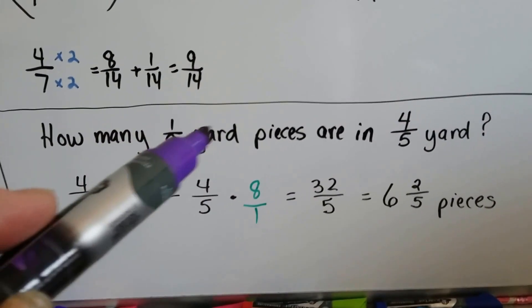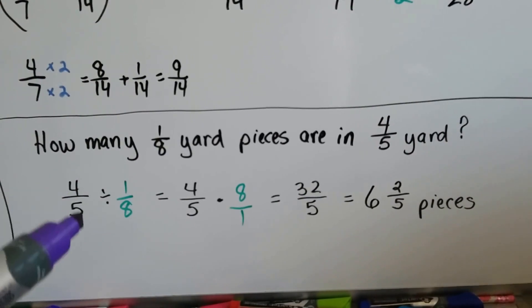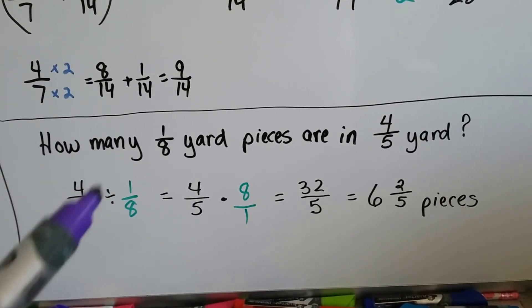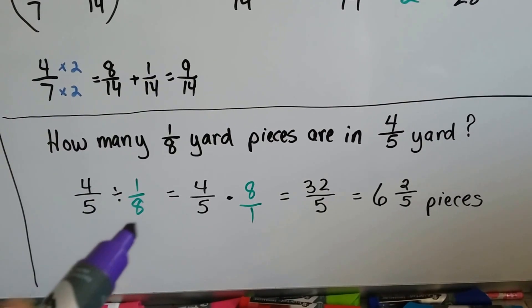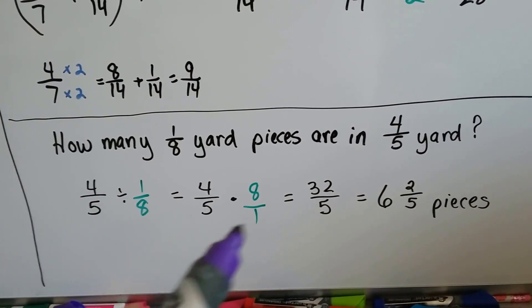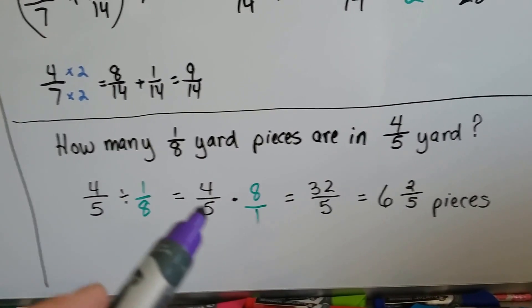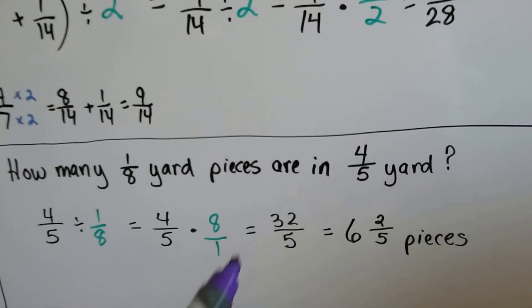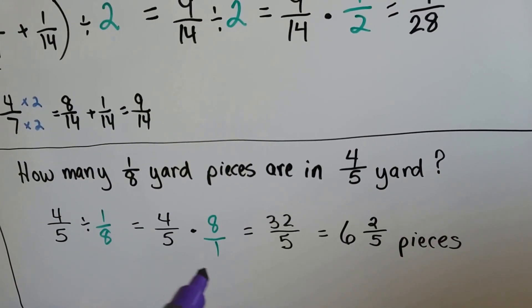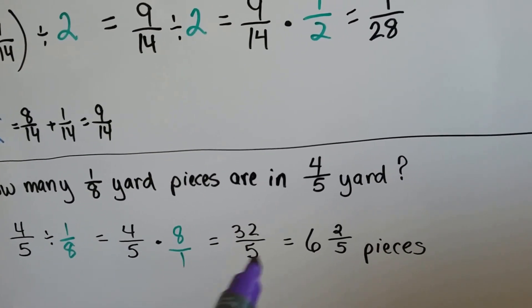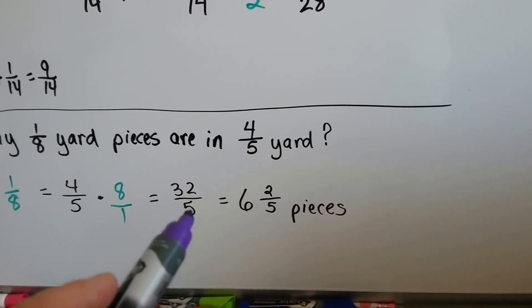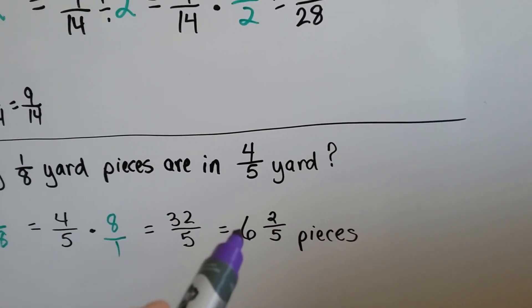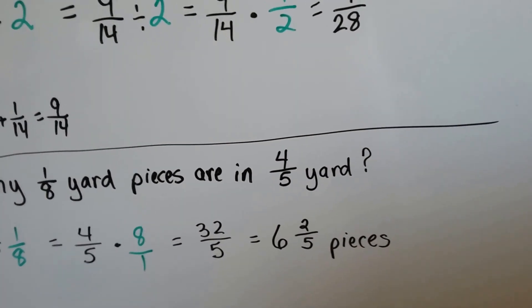What if it said: how many 1 eighth yard pieces are in 4 fifths of a yard? We have 4 fifths of a yard and we want to split it into 1 eighth yard pieces, so we do 4 fifths divided by 1 eighth. We flip this to its reciprocal — it becomes 8 over 1 — and we multiply instead of divide. 4 fifths times 8 over 1: we multiply straight across to get 32 over 5, since 5 and 8 don't cancel and 1 and 4 are as small as they can go. To reduce: 5 times 6 is 30, so there are 6 with two fifths left over — 6 and two fifths pieces.